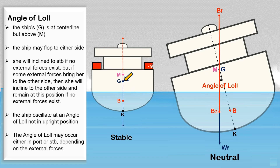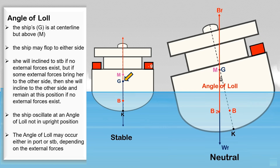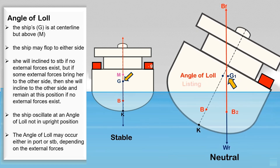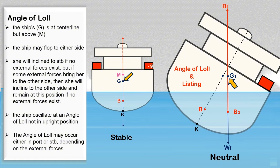For the angle of loll, you cannot simply add weight on the high side — doing so will worsen the situation. If weight is added on the high side and the ship heels to the other side, she would normally rest at the angle of loll, but since weight was added on that side, the new position of the ship's center of gravity will be off the centerline, causing the ship to heel further. Now you have two serious problems: the angle of loll still exists, and the ship's center of gravity is off the centerline.